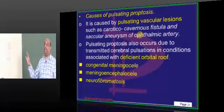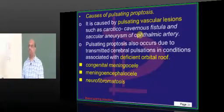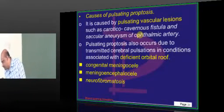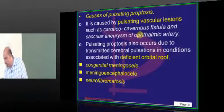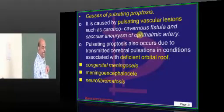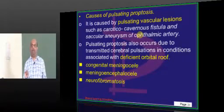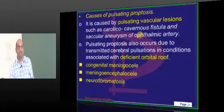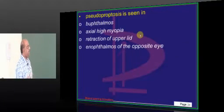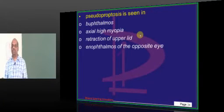If there is a pulsating proptosis, what are the causes? Congenital meningocele, neurofibromatosis, meningoencephalocele — anything can lead to a pulsating proptosis.